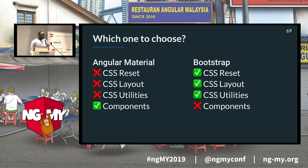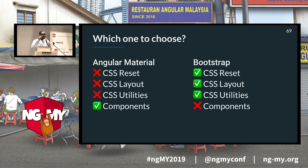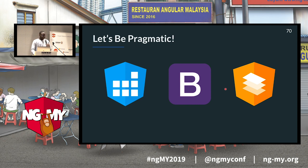Here is a side-by-side comparison of Angular Material and Bootstrap. Which one is best? What is lacking in Angular Material is great in Bootstrap, and vice versa. The CSS reset, CSS layout, and CSS utilities are not a big deal — you could write your own. But if you're a pragmatic developer, you just take those from Bootstrap. I did that, and it works like a charm.